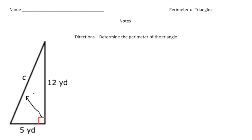So we need to first use the Pythagorean theorem to get side C. So it's going to be A squared plus B squared equals C squared. That's our theorem. And let's plug in our values. So A is 5, so it's going to be 5 squared plus B is 12, so 12 squared equals C squared.